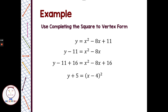On the left side, negative 11 plus 16 combines to be plus 5. Then our last step to put this in vertex form is to subtract 5 from each side. Now, just by looking at the problem, I can pull the vertex of 4, negative 5. Notice how minus 4 is part of the original formula, so the x value is 4, not negative 4.